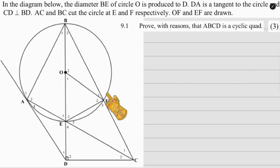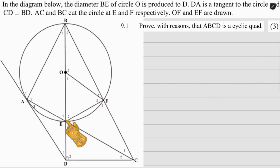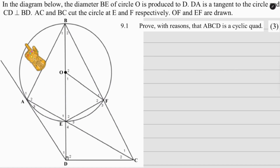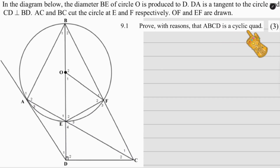Jumping into question 9, we've been given a circle with diameter BE and a tangent DA. These two lines are perpendicular, as indicated on the sketch. First up, we need to prove with reasons that ABCD is a cyclic quad.